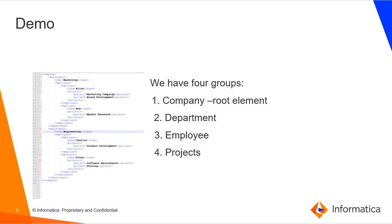In the demo, we'll go through the steps to format the source data and generate the target XML format shown below. On the left, we see that the XML structure has four groups. The root element is the company. A company can have multiple departments. N number of employees can be part of a department, and each employee can be part of multiple projects.